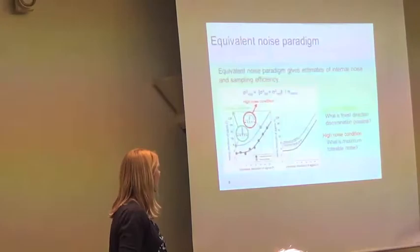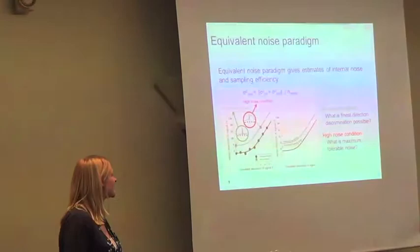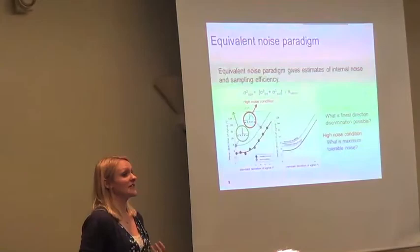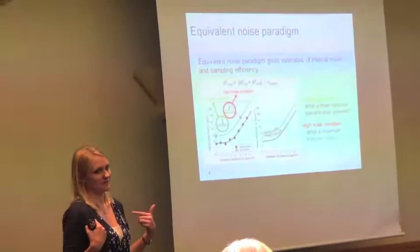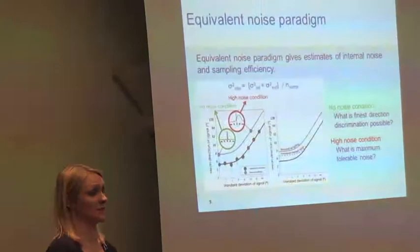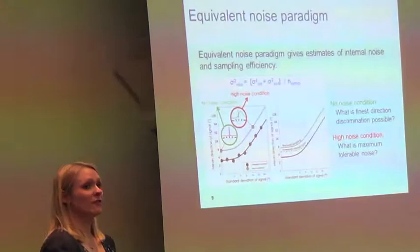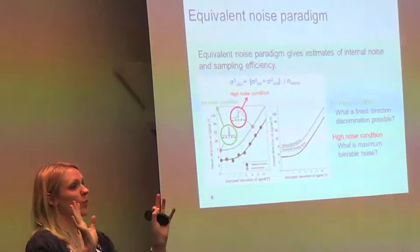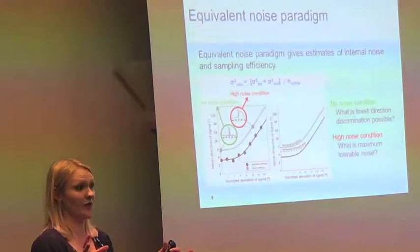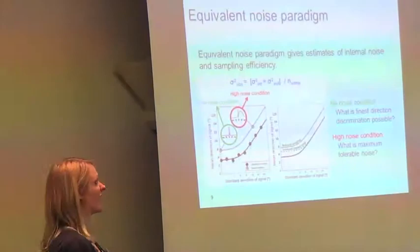We're using the fast version of the equivalent noise paradigm that Stephen talked about. Essentially, the idea is that we can manipulate the variability in the stimulus — the external noise — to get an estimate of the internal noise. To spare the kids from doing billions of trials, we just have two conditions: the no-noise condition, where the standard deviation of dot directions is zero degrees, and the high noise condition, where we fix the mean direction at 45 degrees and add in external noise, increasing the standard deviation of dot directions until accurate discrimination breaks down. From that, we can estimate the equivalent noise function, and then we get our internal noise and sampling efficiency estimates.